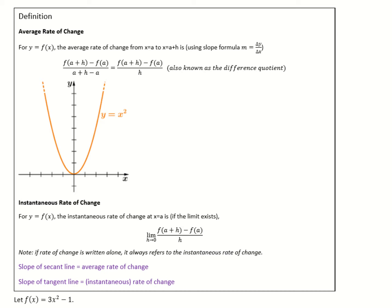Using the function y = x², say I pick x = -1 and then add 3 so h = 3, giving the point x = 2 where y = 4. The line connecting these two points is called the secant line. The difference quotient finds the slope of this secant line — it finds the average rate of change from x = -1 to x = 2.